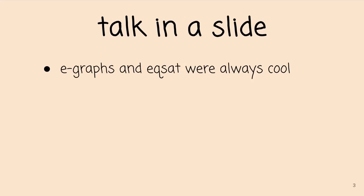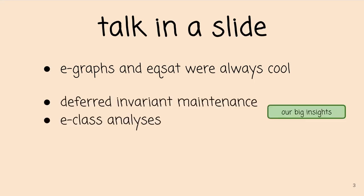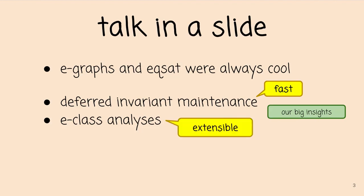I want to put the whole talk up front in one slide. We're going to start with a little background on E-Graphs and equality saturation and why these are really cool data structures and techniques to build term rewriting systems, whether you want to build an optimizer or an equivalence checker. Then we're going to talk about our two big contributions: deferred invariant maintenance, which makes equality saturation faster, and E-Class Analyses, which makes it more extensible.